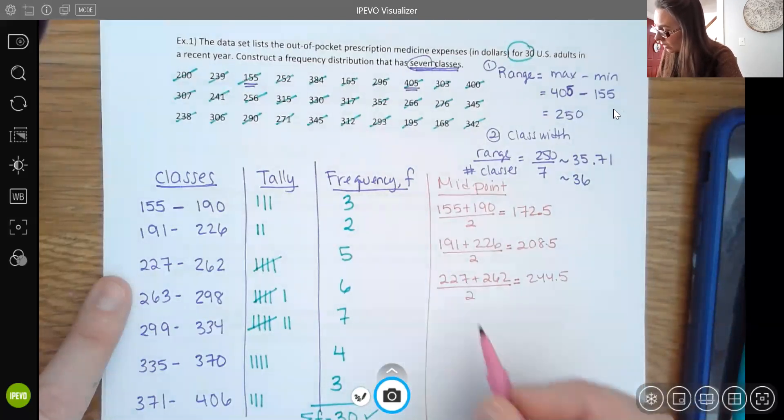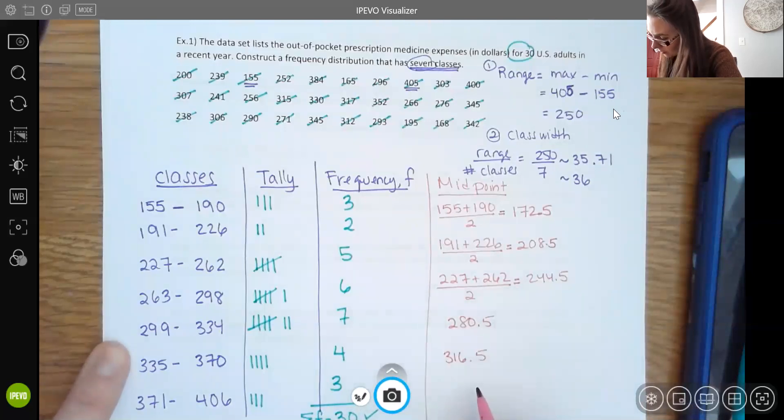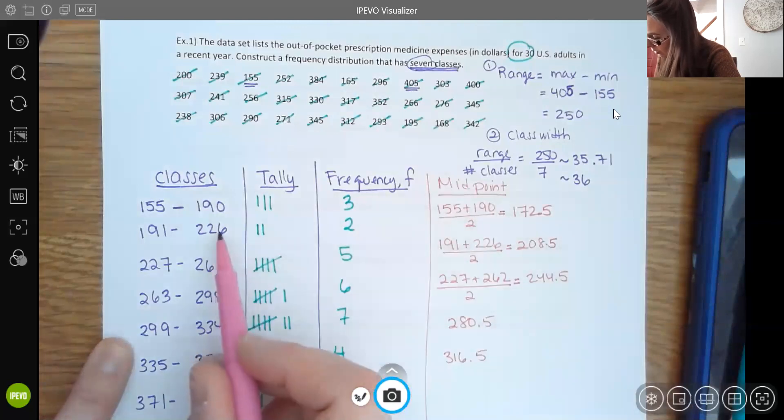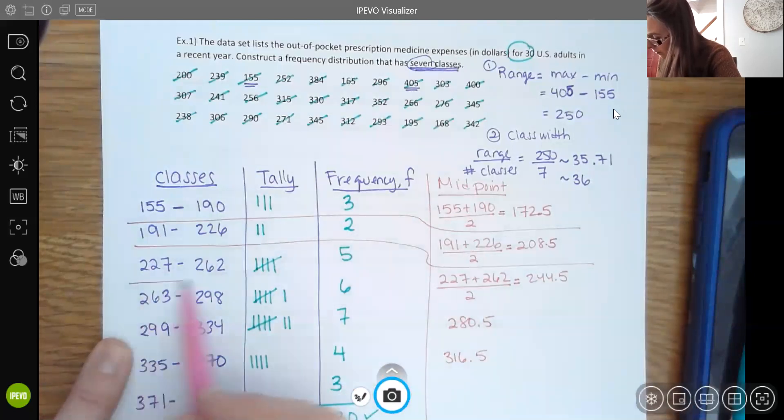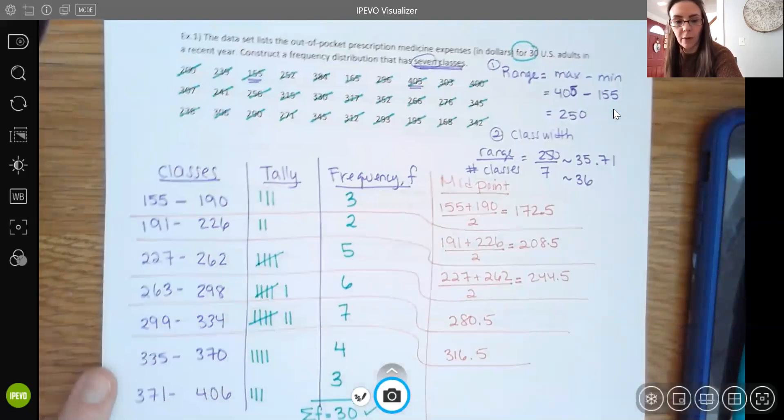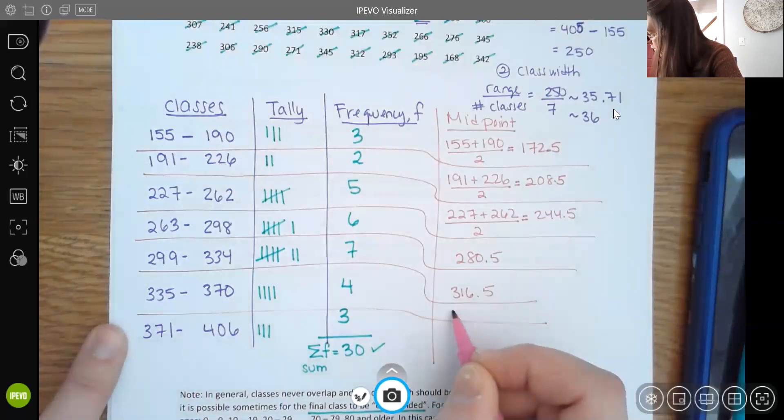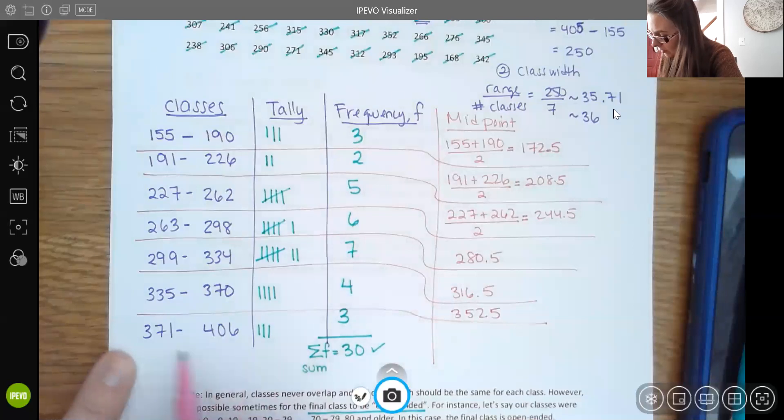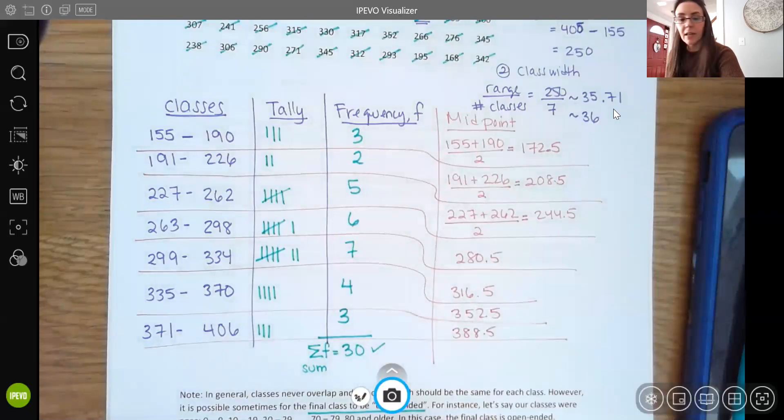So I won't write all the others out. I'll just show you the answers and you can try it at home. Here you get 280.5, 316.5. And then for this one here, you should be getting 352.5. And then for your last row, you should be getting 388.5. So we can find the midpoint as well.